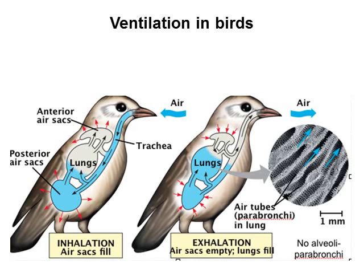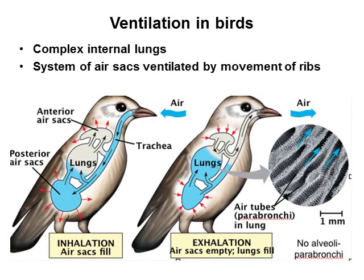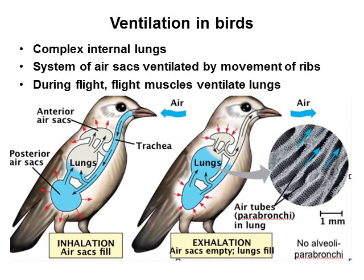The last topic is gas exchange in birds. Birds have complex internal lungs with a system of air sacs ventilated by movement of the ribs, like in humans, reptiles and other mammals. During flight, their flight muscles engage with their gas exchange muscles to ventilate their lungs. The close-up image shows all the air tubes in the lungs — there is a humongous surface area there, which increases gas exchange in those birds.